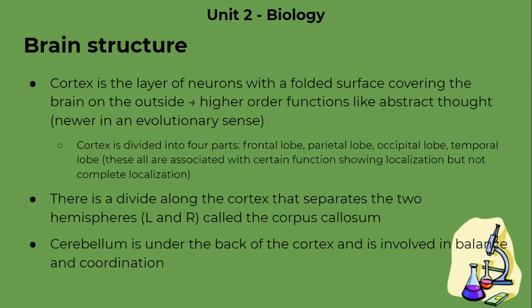The cortex is basically the outer covering of your brain — that large portion, all the interconnected fabric of neurons, the folded surface covering the brain. This controls higher order functions, not just things needed for survival, such as abstract thought. The cortex is the topical portion of the brain and is considered a newer section in terms of evolutionary perspective. It is highly folded, which, like other folded structures in biology, increases surface area so we can maximize the neural impulses going through there.